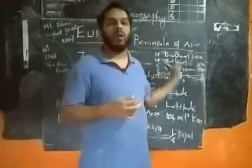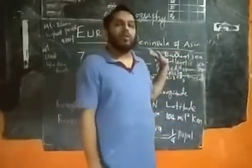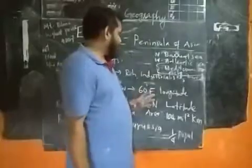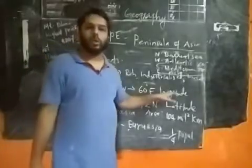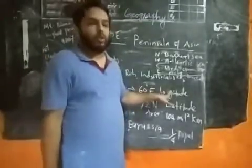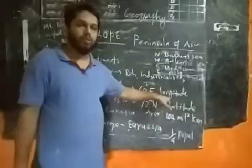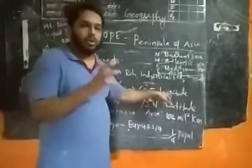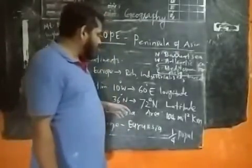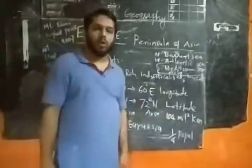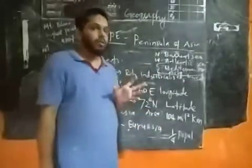Now, the location of Europe — where is Europe located? On the globe, Europe is located between 10 degrees west and 60 degrees east longitude. I repeat: 10 degrees west to 60 degrees east longitude. And in terms of latitude, Europe is located between 36 degrees north and 72 degrees north.